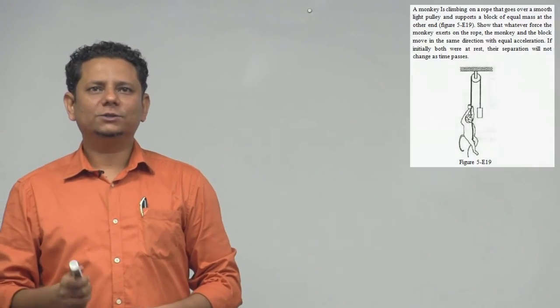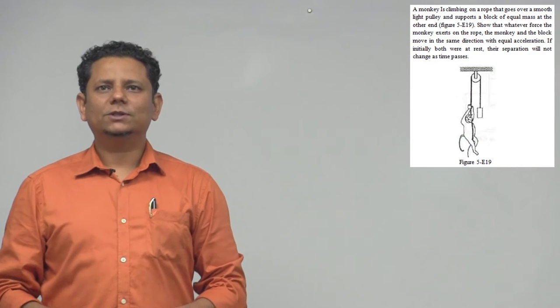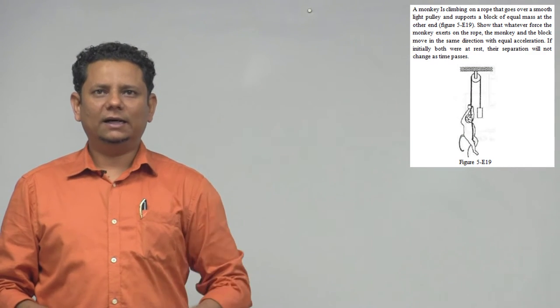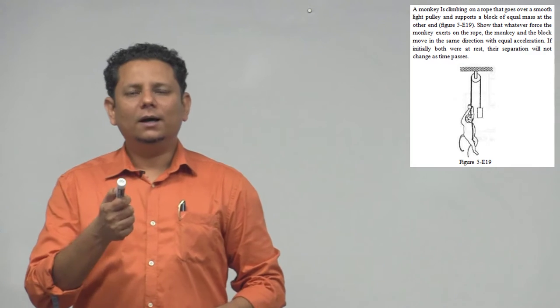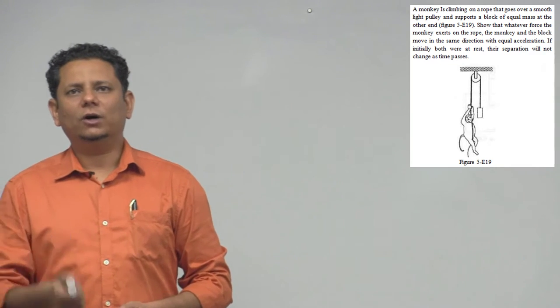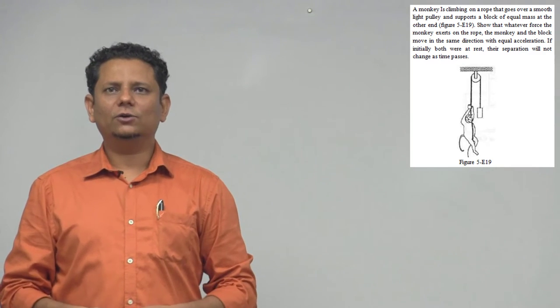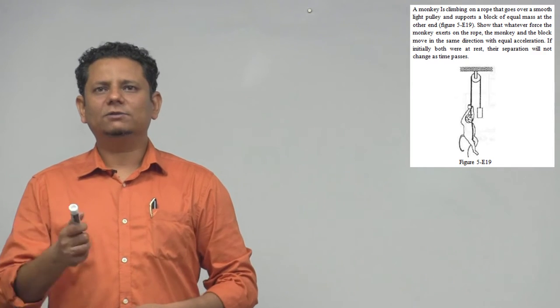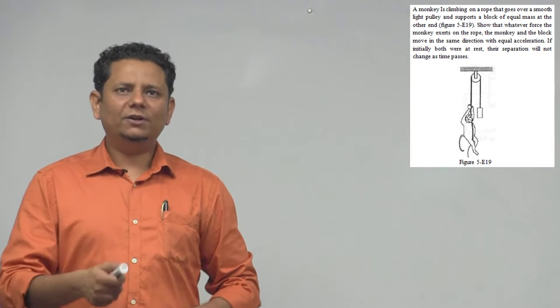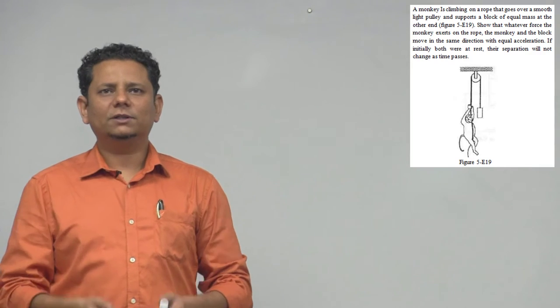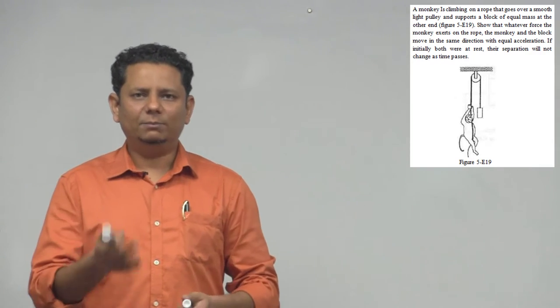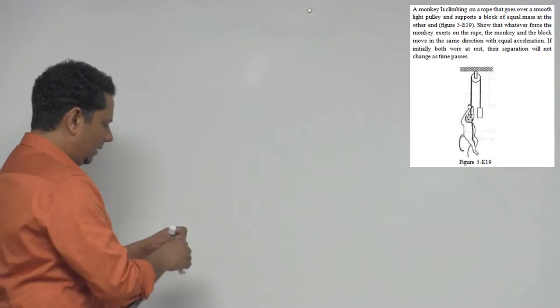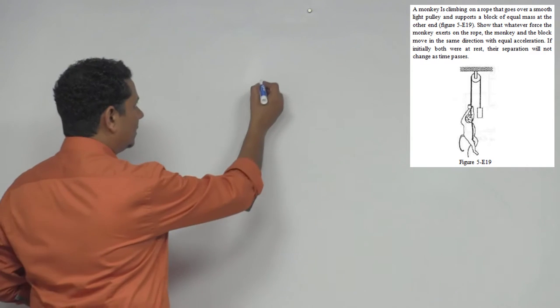The question says: a monkey is climbing on a rope that goes over a smooth light pulley and supports a block of equal mass at the other end, as shown in the figure. Show that whatever force the monkey exerts on the rope, the monkey and the block move in the same direction with equal acceleration. If initially both were at rest, their separation will not change as time passes.